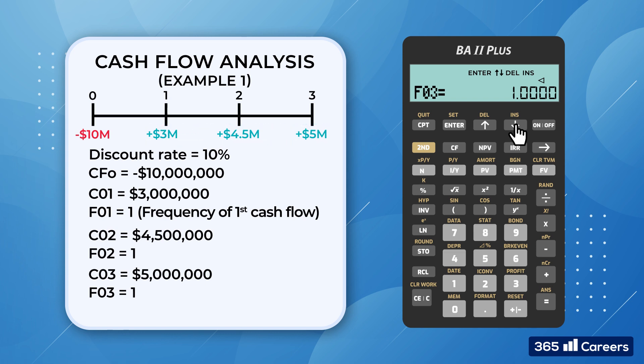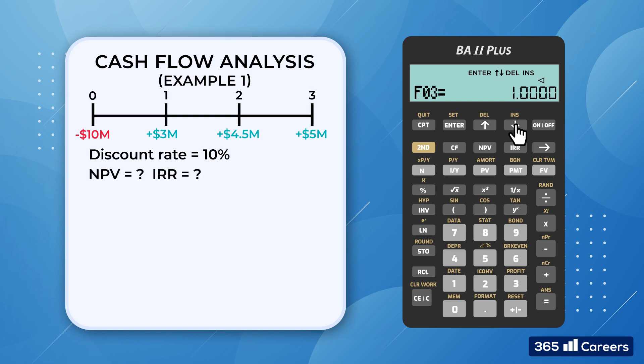Fortunately for the problem at hand, all we have to do is input these three cash flows. Now that we have entered the relevant cash flows, let's calculate the project's net present value and internal rate of return. We can perform these calculations effortlessly. First we press the NPV button.